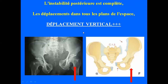Dans ces lésions, l'instabilité postérieure est complète et les déplacements se font dans tous les plans de l'espace, car il y a une rupture de tous les ligaments sacro-iliaques et pubiens. Le déplacement prédominant est vertical. Sur le schéma et la radiographie, l'hémi-bassin droit n'est pas au même niveau que l'hémi-bassin gauche — il est plus haut, suite au traumatisme par cisaillement. En avant, disjonction symphysaire ; en arrière, ouverture de la sacro-iliaque, avec déplacement vertical de l'hémi-bassin.